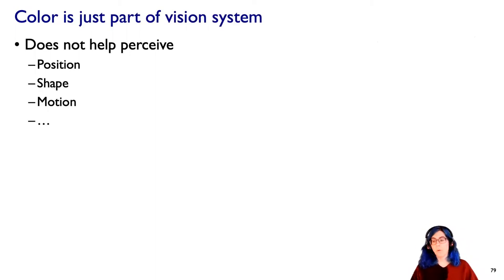So color is only part of the visual system. It doesn't directly help you perceive things like spatial position or shape or motion, but there's a lot of complexity to color.